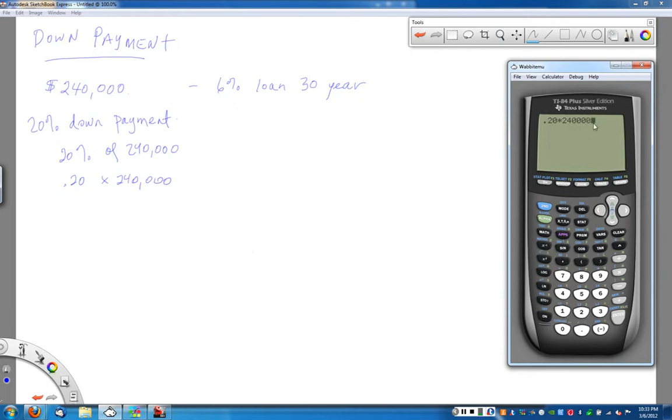.20 times by $240,000. Don't mess up your zeros here. 1, 2, 3, 4, I think that should work. Enter. And what that means is I need to come up with $48,000 as a down payment.